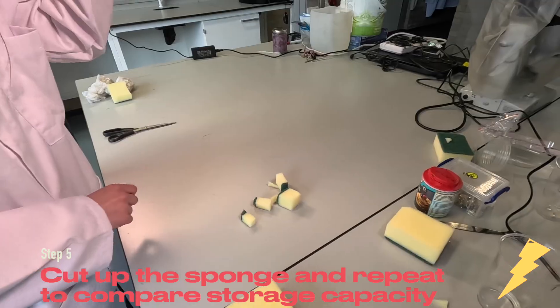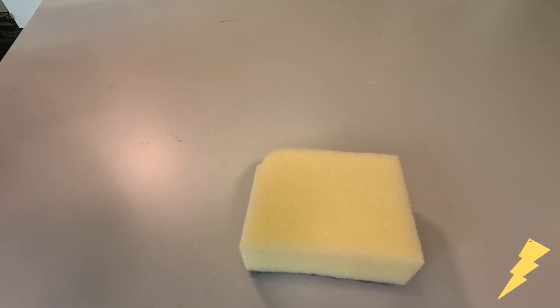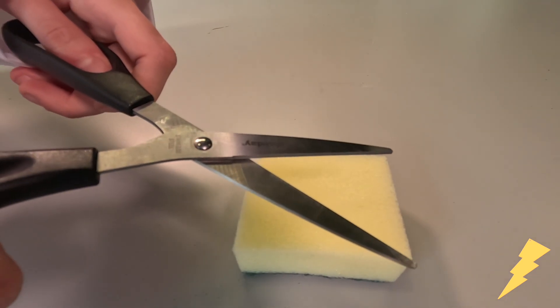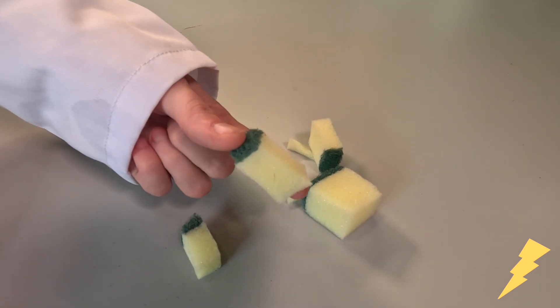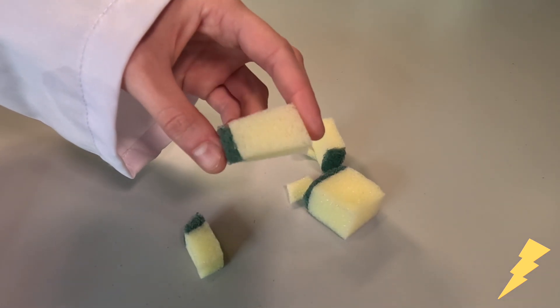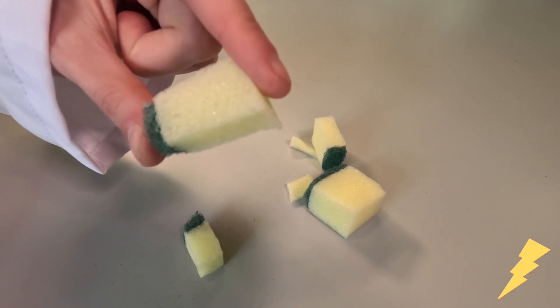We can experiment with different sized sponges to see how their area affects how much water they absorb. So now I'm going to cut the sponge up into small bits. Now we've cut up our sponges into smaller pieces, let's see how much water they absorb compared to our previous big sponge.